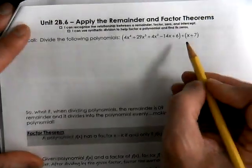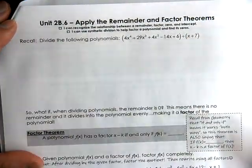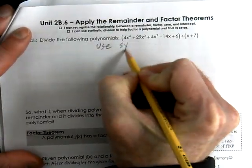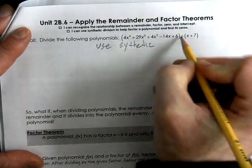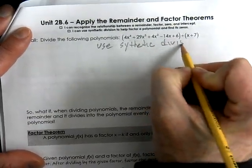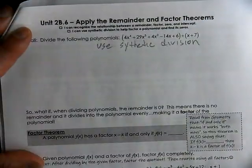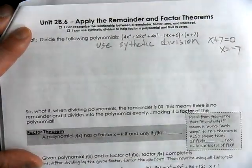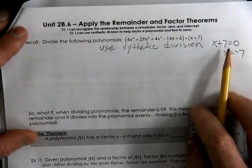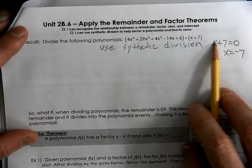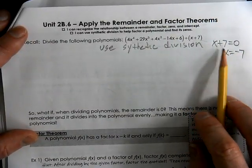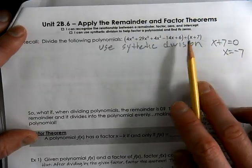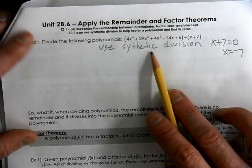One way that we can do it, because this is a first degree, we like to use synthetic division. So x plus 7 equals 0. We have to make this have x equals. You need to know what the zero is. So x equals negative 7 is the zero. That's the value we're going to use in our synthetic.